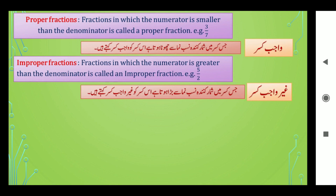Example: پانچ بٹے دو یعنی five upon two — یہاں پر پانچ شمار قرندہ ہے اور دو نصف نماز ہے۔ پانچ بڑا ہے اور دو چھوٹا ہے — جس قصر میں شمار قرندہ نصف نماز سے بڑا ہوتا ہے، یہ غیر واجب قصر ہے۔